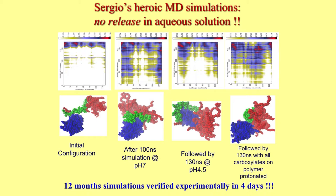What Sergio then does is simulate a reduction of pH by protonating and therefore neutralizing a significant portion of the polymer. He runs another 130 nanoseconds at pH 4.5 — and it still sticks. So finally, Sergio just neutralized the whole polymer, really simulating a pH more like three, and ran that for another 130 nanoseconds. Still, they stick together — they don't separate.